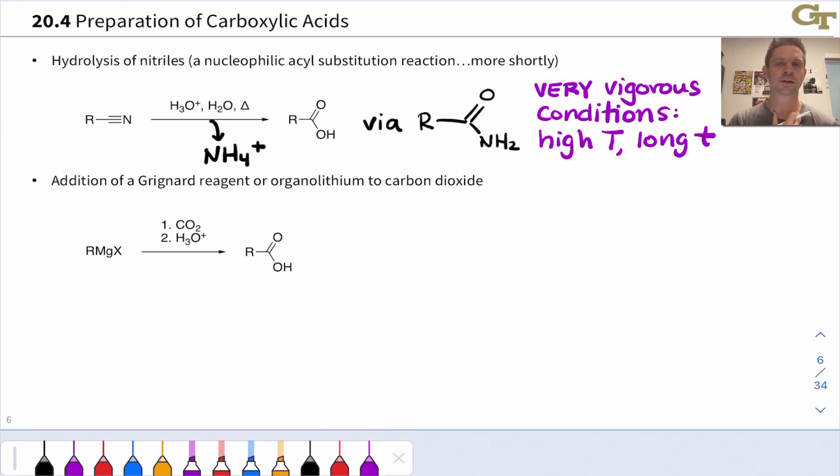Acid, water, heat will convert a nitrile into a carboxylic acid. A second method to prepare carboxylic acids takes advantage of Grignard chemistry, and the fact that CO2 is a fantastic electrophile. This allows us to convert an organohalide, RX, ultimately into the corresponding carboxylic acid, where the carboxyl group CO2H has replaced the halogen.